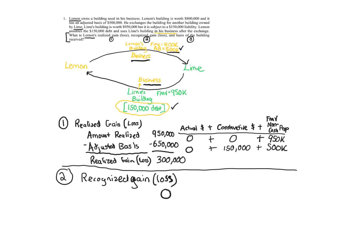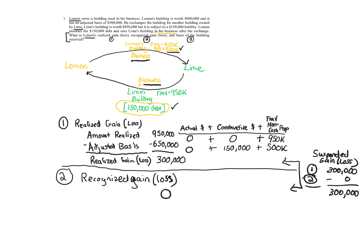Between step one and step two, we calculate what we call the suspended gain or loss. The suspended gain or loss is step one minus step two. Step one was a $300,000 realized gain, minus step two which is zero, giving us a $300,000 suspended gain. That's going to be important for checking our work later on.